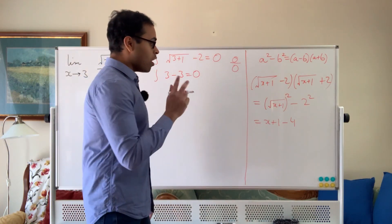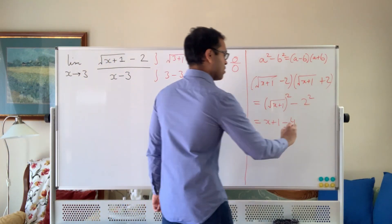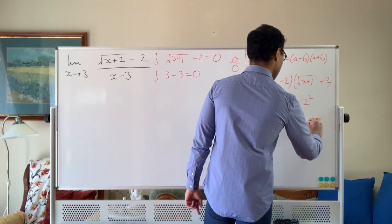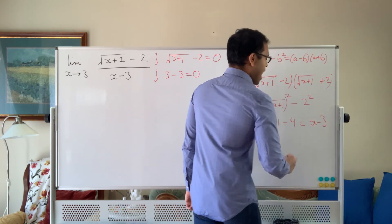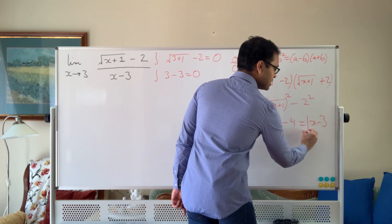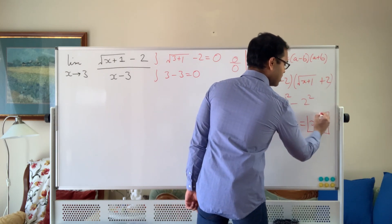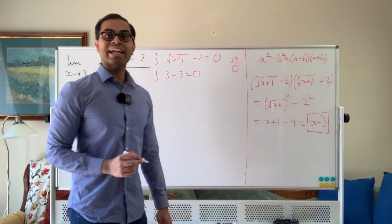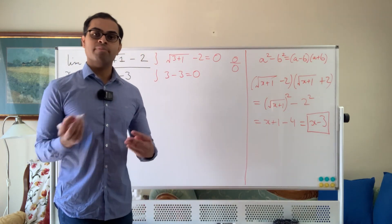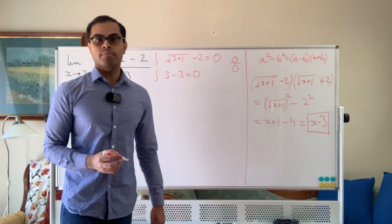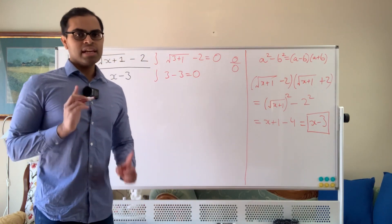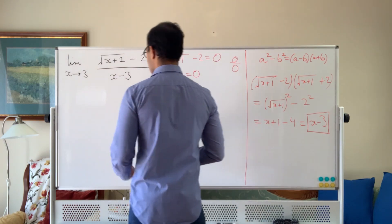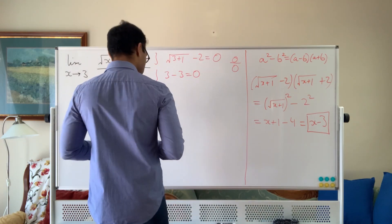We've successfully eliminated the square root and this equals x minus 3. This is the trick — it's called multiplying by the conjugate. The beauty here is that we can now cancel off the x minus 3 from top and bottom.